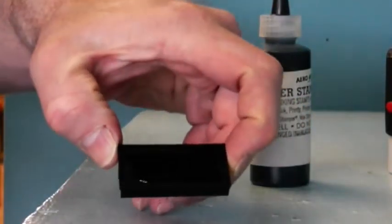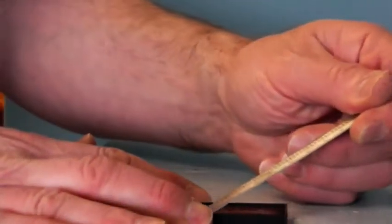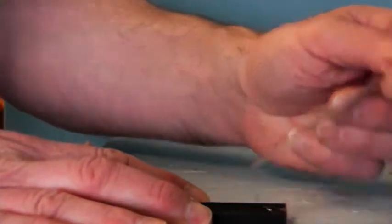The ink will soak into the pad. If you wish to hurry it up, you can take something like a ruler or a paper clip and just gently rub the surface of the pad.